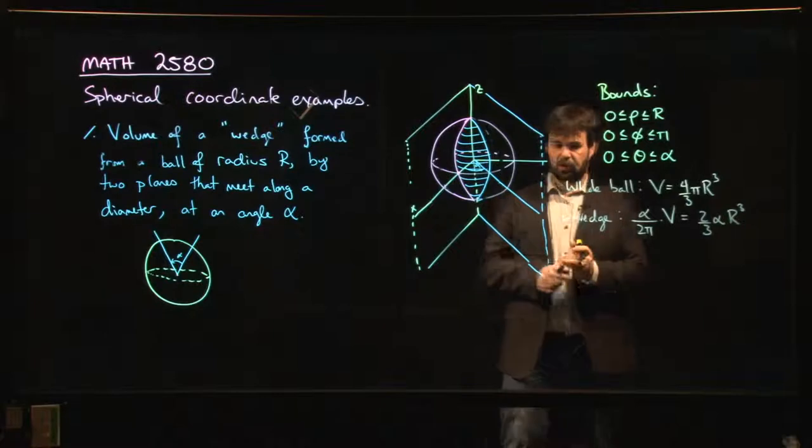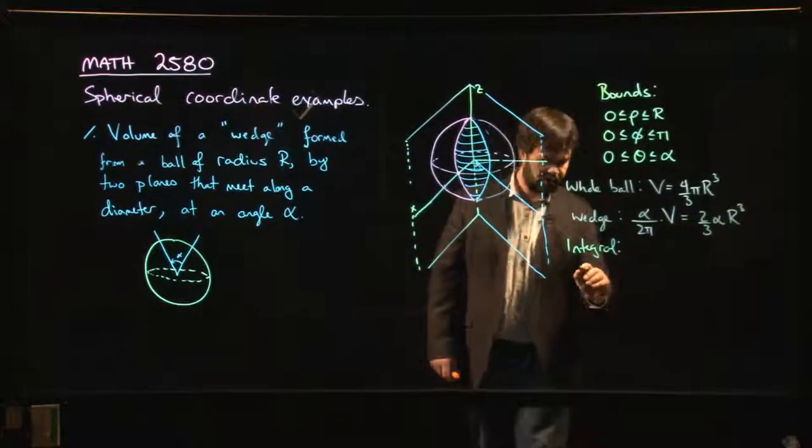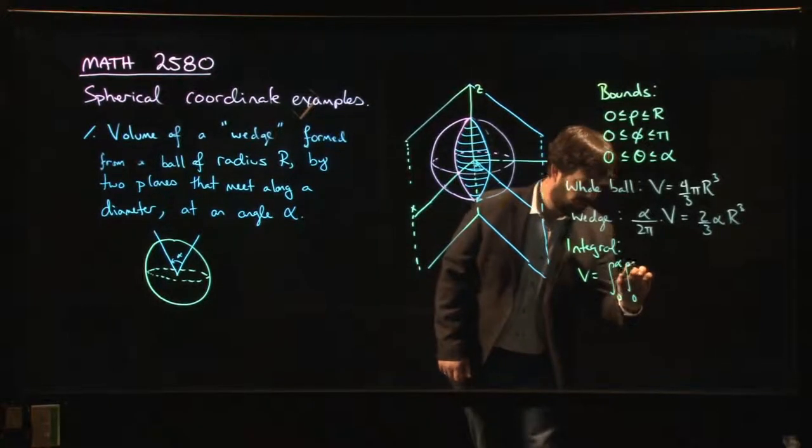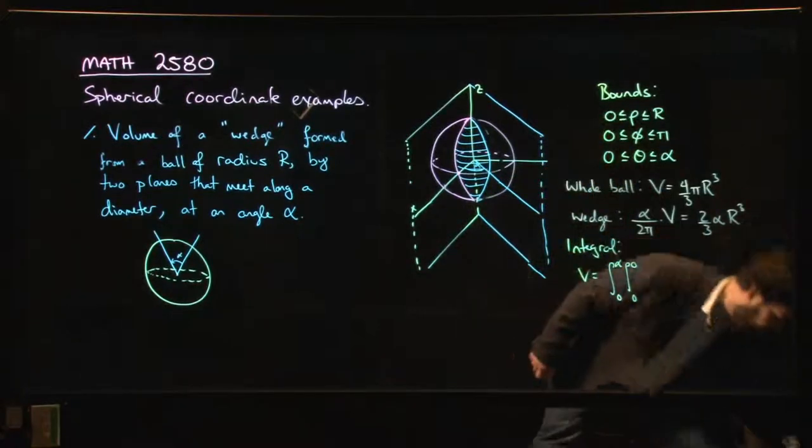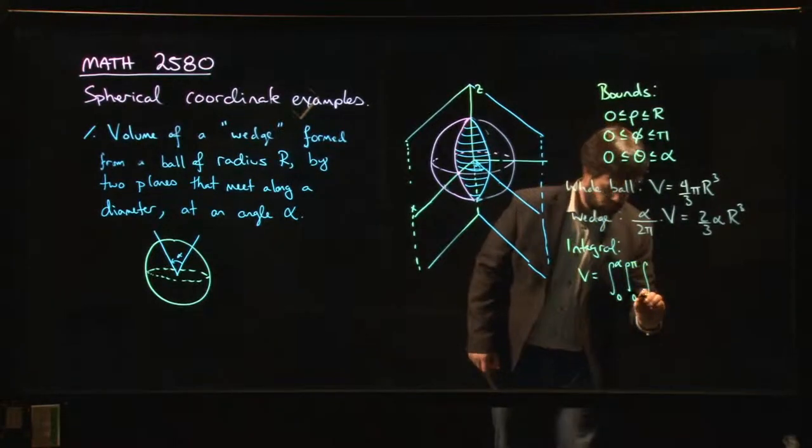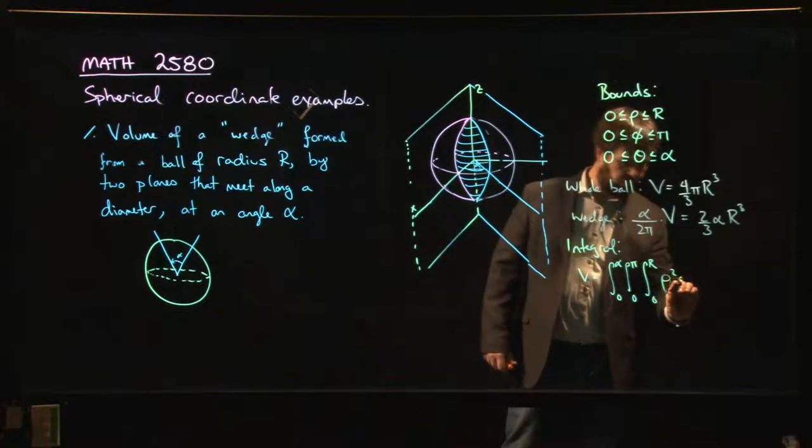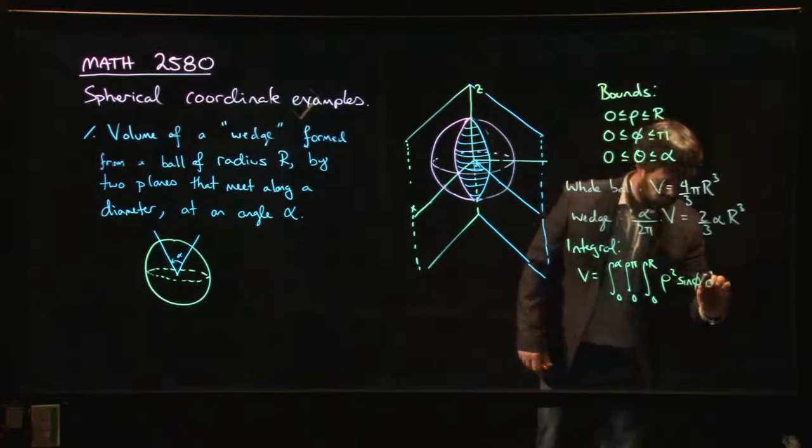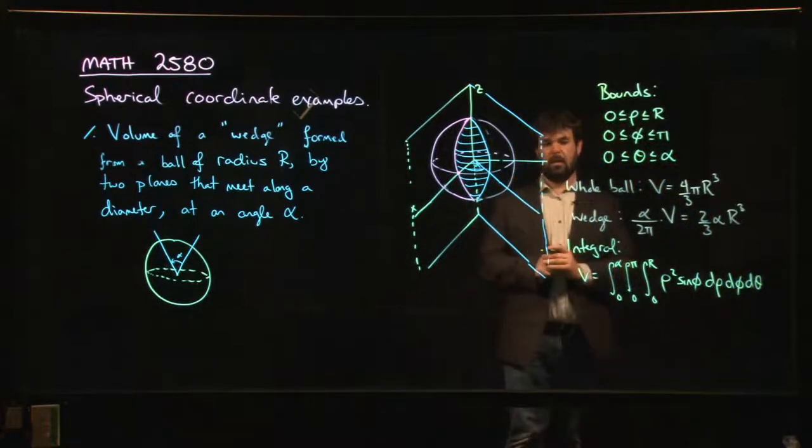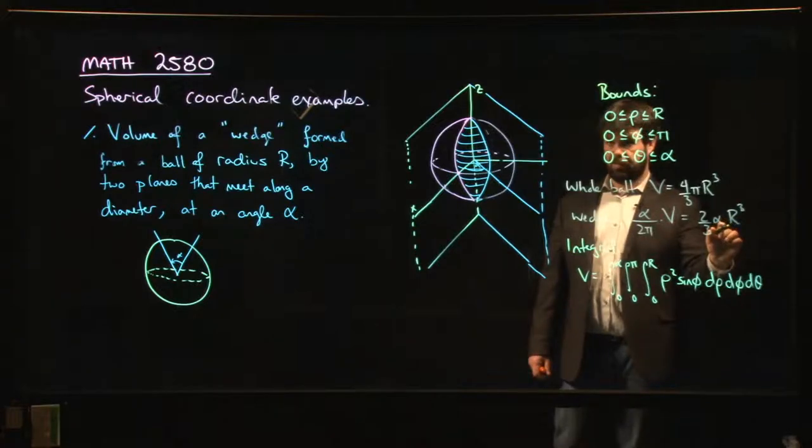Of course, we do want to set this up as an integral. So what does the integral look like? And I'm going to leave it as an exercise for you to confirm that you do get this answer. The integral should look like this. Theta goes from 0 to alpha. Phi goes from 0 to pi. Rho goes from 0 to R. And our dV, remember, is rho squared sine phi, d rho, d phi, d theta. So I'll leave it as an exercise for you to check that if you carry out the integral, this should be the value that you get.